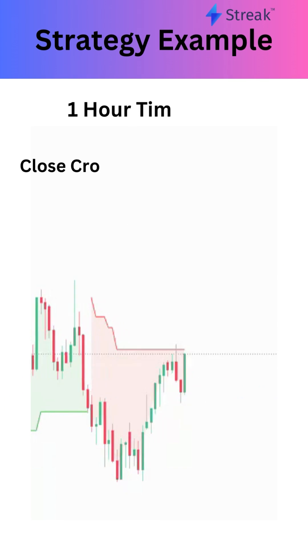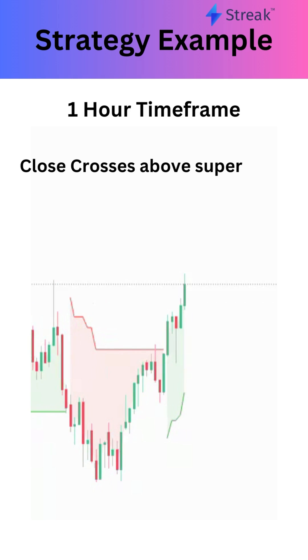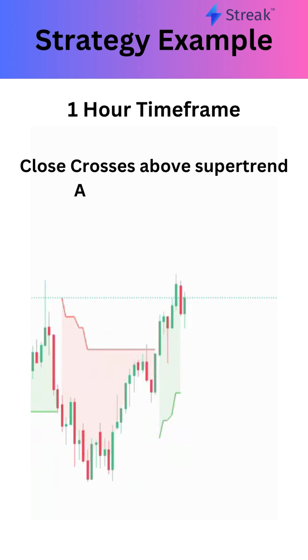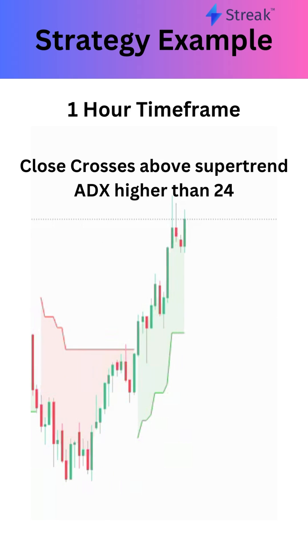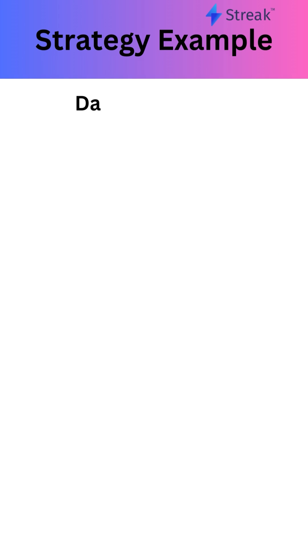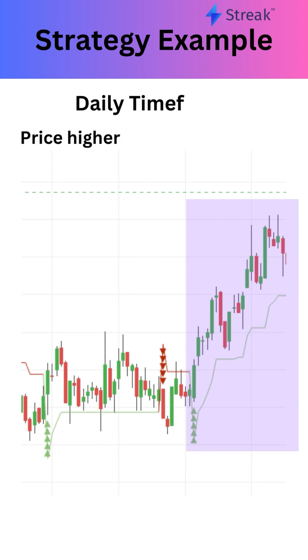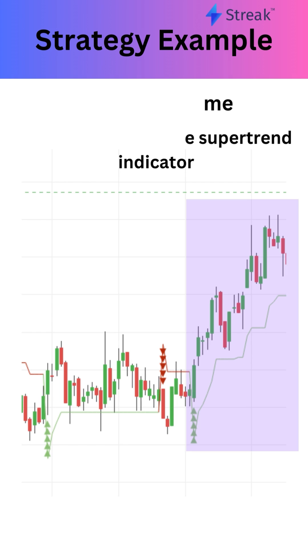On the 1-hour time frame, the price should cross above the supertrend indicator and the ADX should be higher than 24. On the daily time frame, the price should be higher than the supertrend indicator, indicating a bullish trend on the higher time frame.